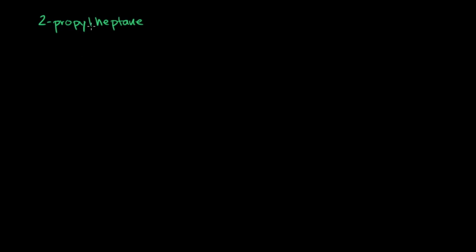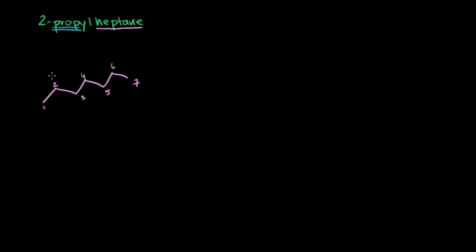To correct this error, let's first draw that structure. Heptane means seven carbons, so let's put seven carbons: one, two, three, four, five, six, seven. This is heptane, and let's give the numbering one through seven. On the second carbon there is a propyl group, so let's draw three carbons — one, two, three — and that propyl group is attached on the second carbon.